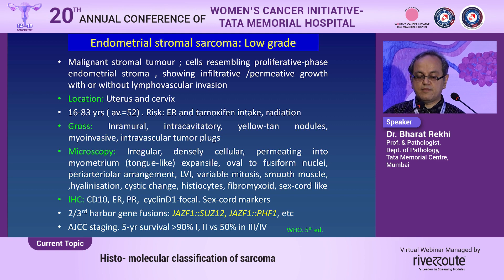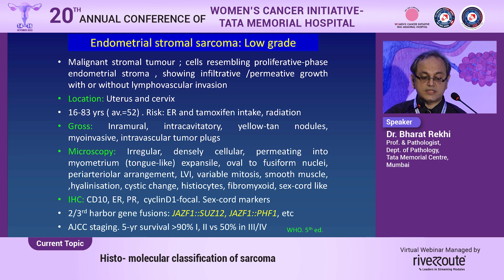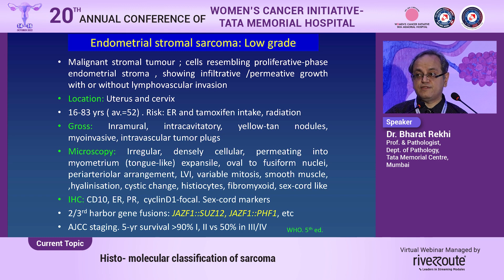Microscopically, they resemble endometrial stromal tissue — oval to short spindle cells permeating through the myometrium in tongue-like projections, associated with lymphovascular emboli. There can be variable or brisk mitosis, which can mislead the pathologist toward considering it high-grade, but mitosis is no longer the parameter to classify something as low- or high-grade. They can also show smooth muscle differentiation, variable hyalinization, cystic change, histiocytes, and sex cord-like components. Immunohistochemically, these tumors consistently show CD10 expression with frequent ER/PR expression, and can show cyclin D1, which comes more often in high-grade types. About two-thirds of low-grade ESS show JAZF1-SUZ12 fusion or JAZF1-PHF1 fusion, among a range of other fusions.